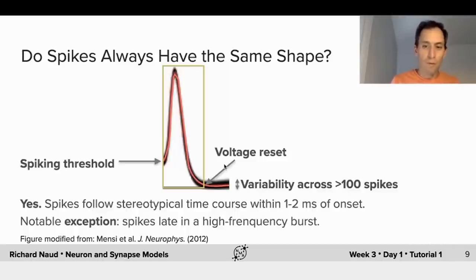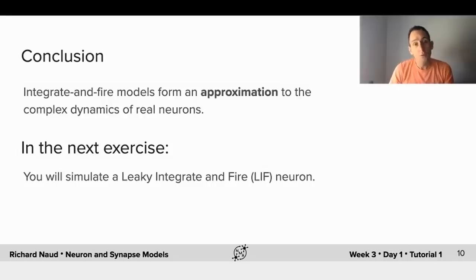This concludes the first part of this lecture on reduced neuron models. I'd like to summarize what I've said so far in saying that integrate and fire models are a useful approximation of complex dynamics of real neurons. And in the next exercise, you'll get to explore these dynamics with various types of inputs.